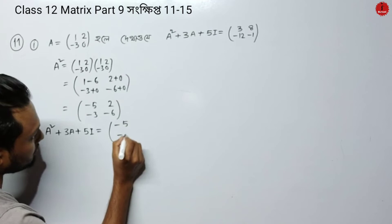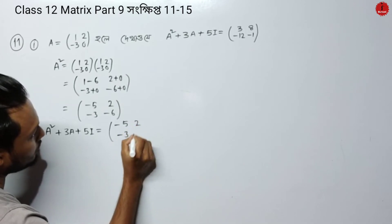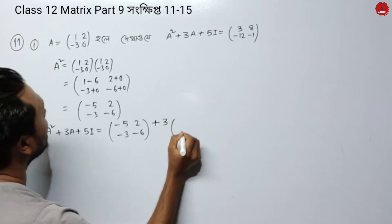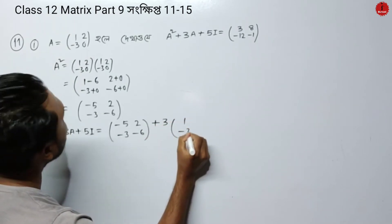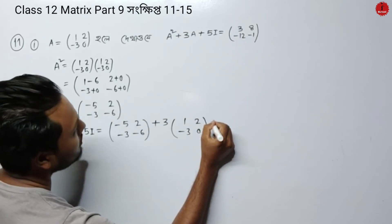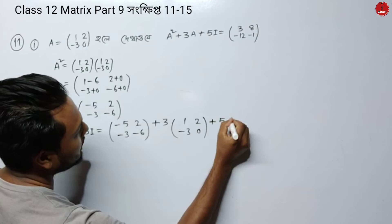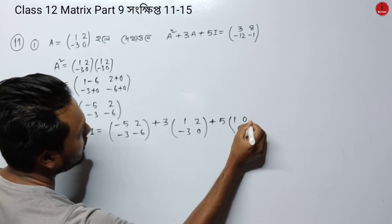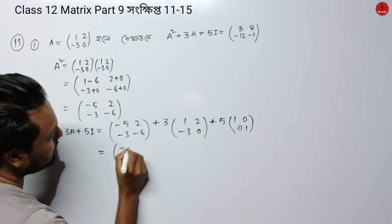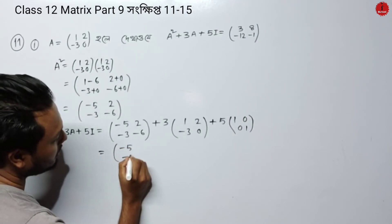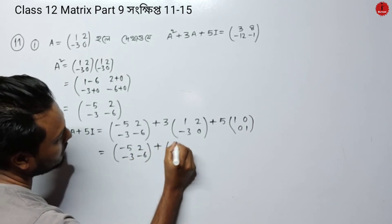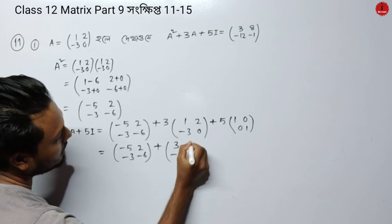So A² gives us entries: -5, -3, 2, -6. Then 3A gives 3 into [1, 2; -3, 0], which is [3, 6; -9, 0]. And 5I gives 5 into the identity matrix [1, 0; 0, 1], so 5I = [5, 0; 0, 5].